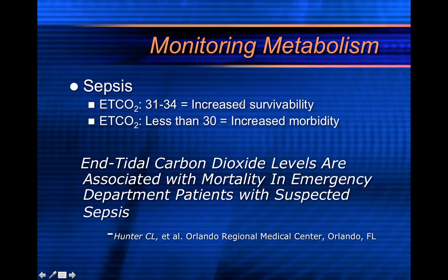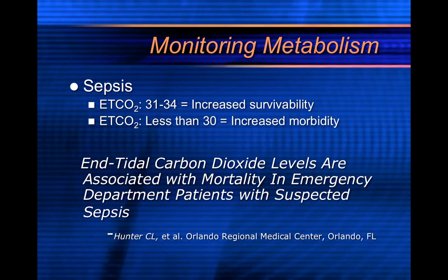If you have a value less than 30, your morbidity is super high. Knowing that, these patients require fluids — give your septic patients as much fluids as you can without causing pulmonary edema. Obviously put them on oxygen because they are in shock. And give them pressors; if their blood pressure is low, pressors will really increase their survivability. Get fluids, oxygen, and pressors from the pre-hospital clinician, then continue that care in the hospital and get them on antibiotics.